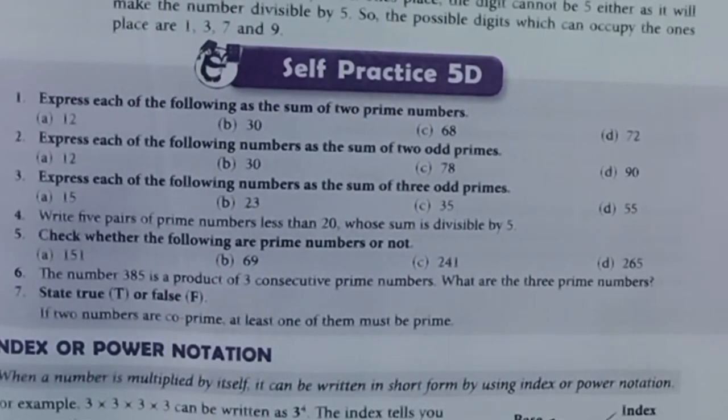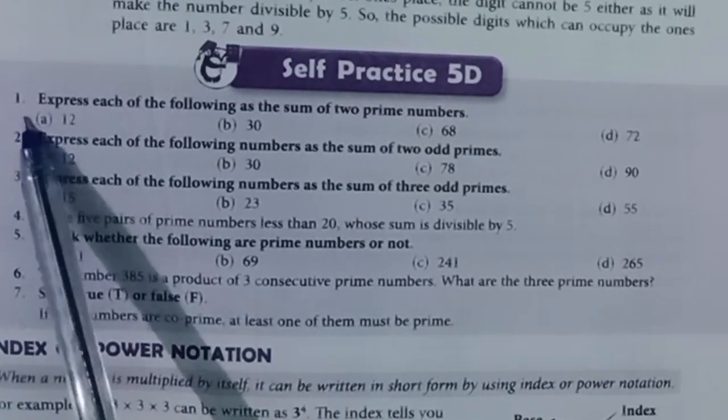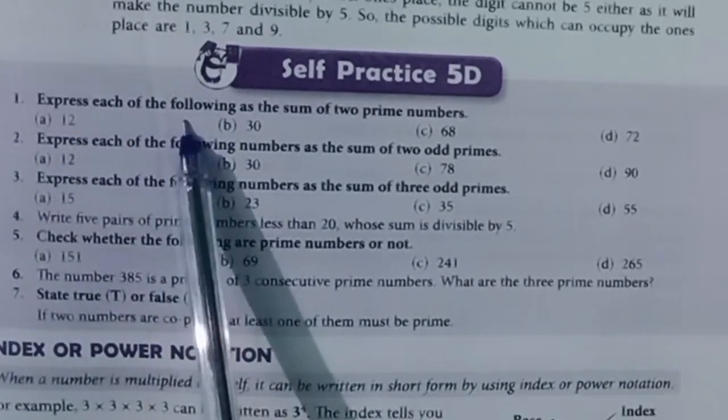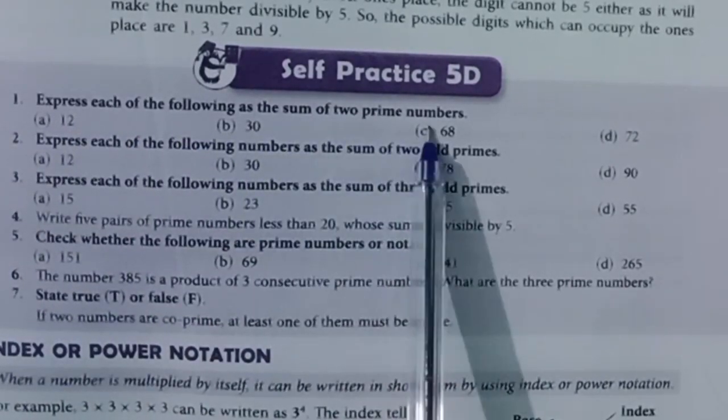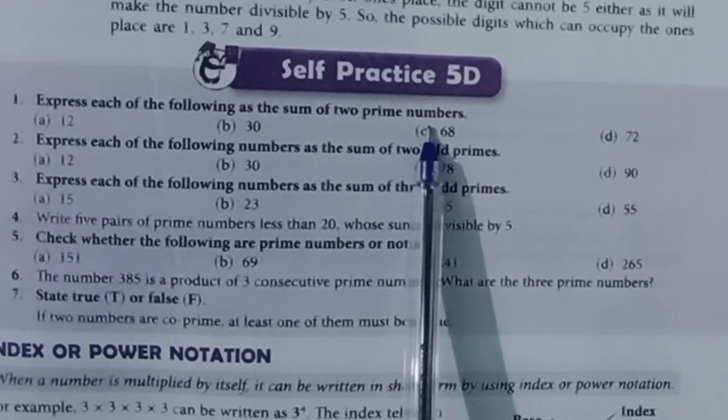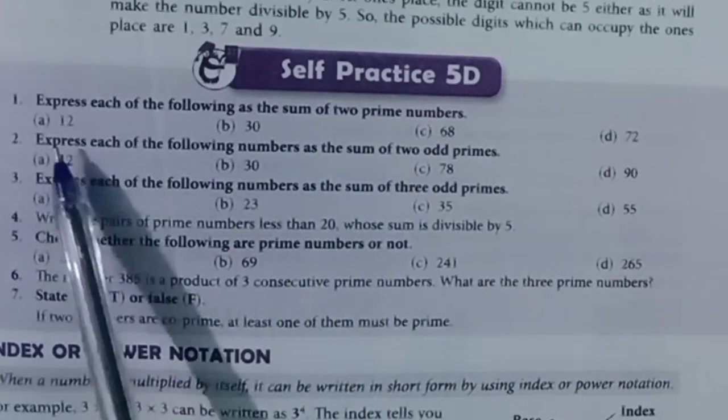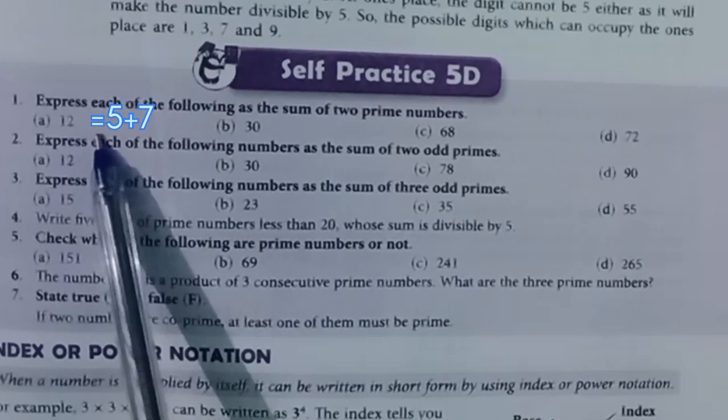Question 1: Express each of the following as the sum of two prime numbers. A. 12, answer: 5 plus 7.